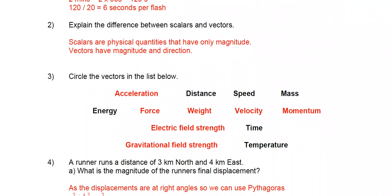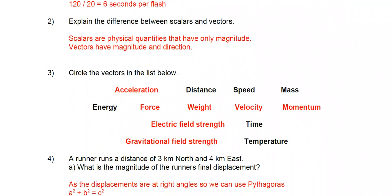Explain the difference between scalars and vectors. Scalars are physical quantities that have only magnitude, while vectors have magnitude and direction.